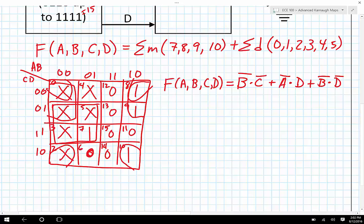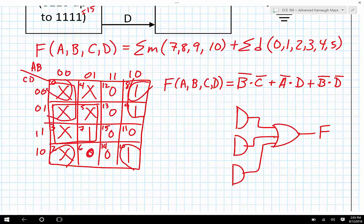So I can see here that I've got three terms. I'm going to need to have three AND gates. And those are going to feed into an OR gate. That'll generate F. I'm going to need D and D bar. B bar is going to be used for two of them.